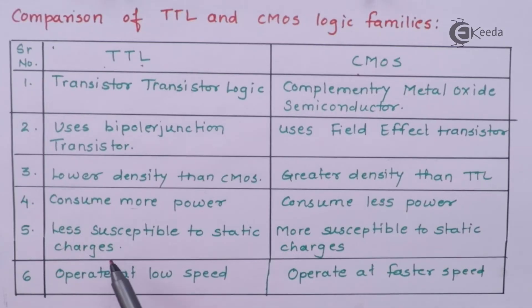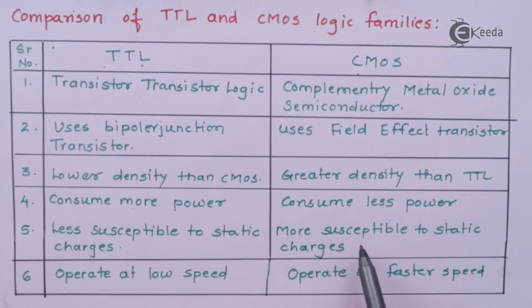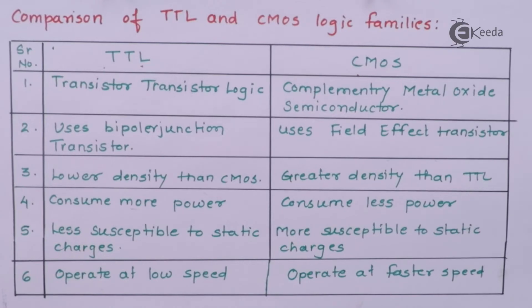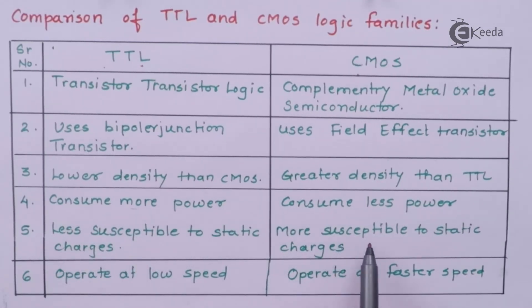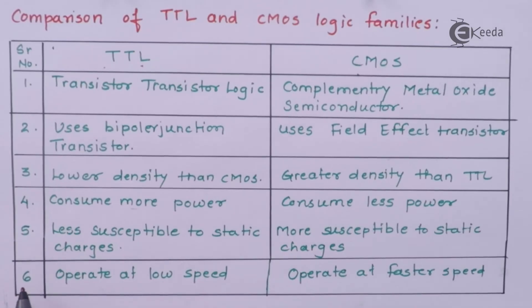Fifth, TTL is less susceptible to static charges, while CMOS is more susceptible to static charges. This is an advantage of BJT over FET. Since TTL uses transistors, it is less susceptible, but CMOS is more susceptible to static charges.